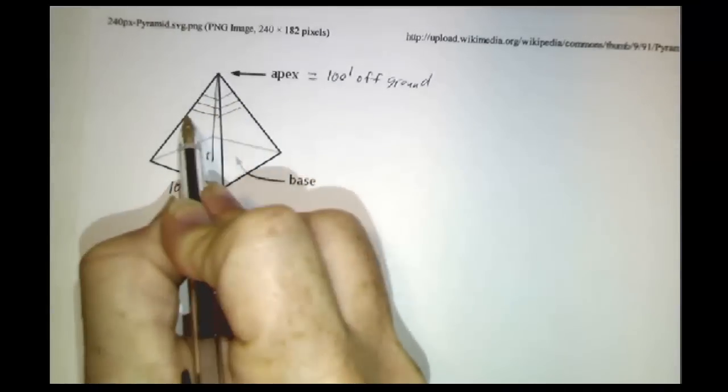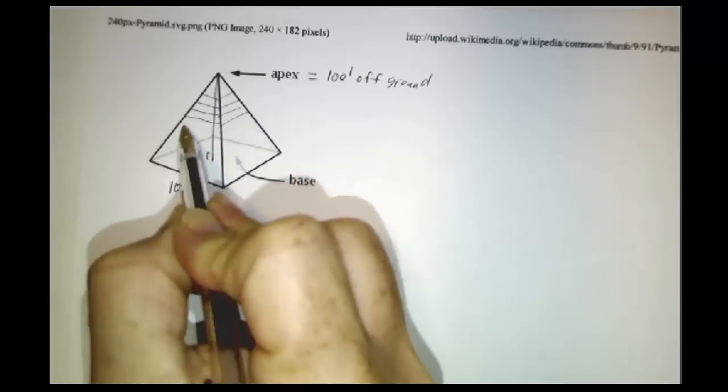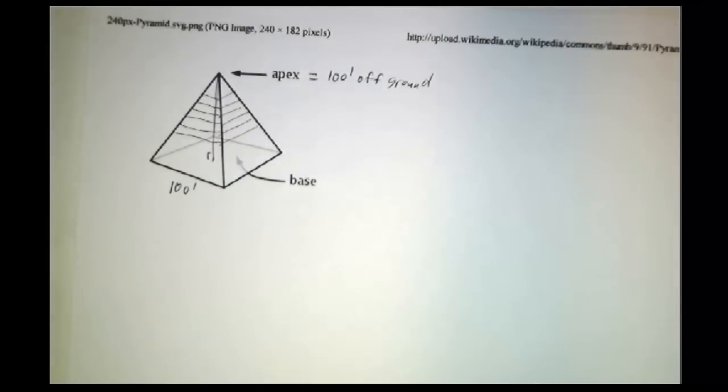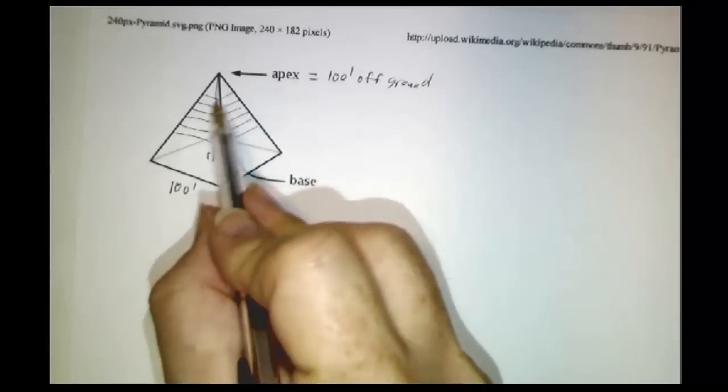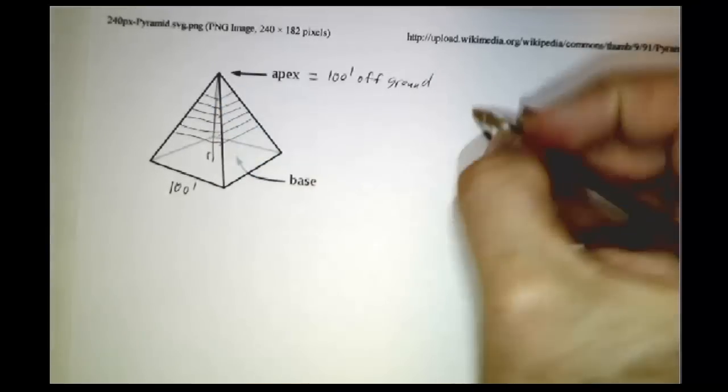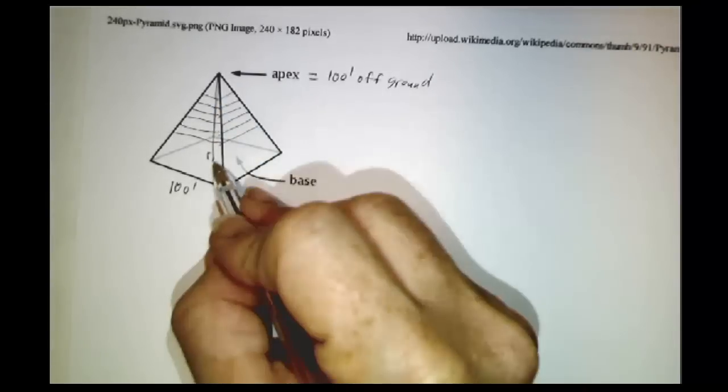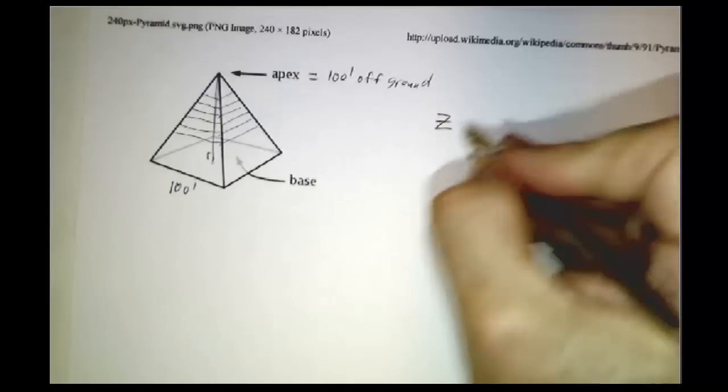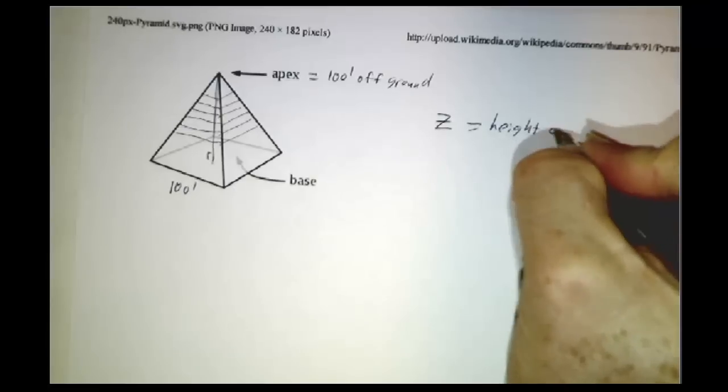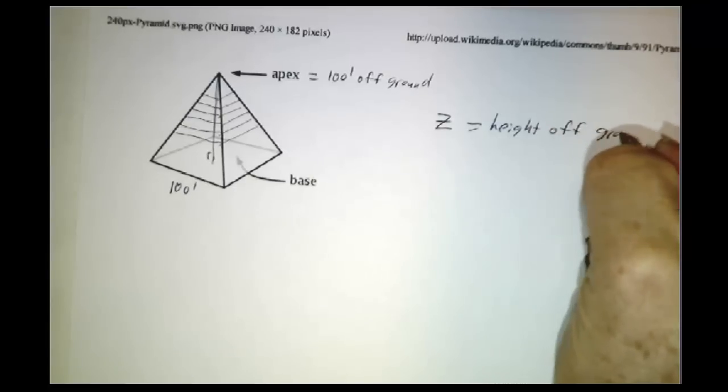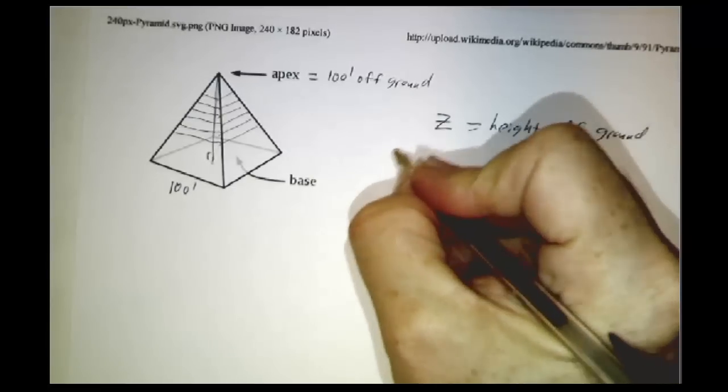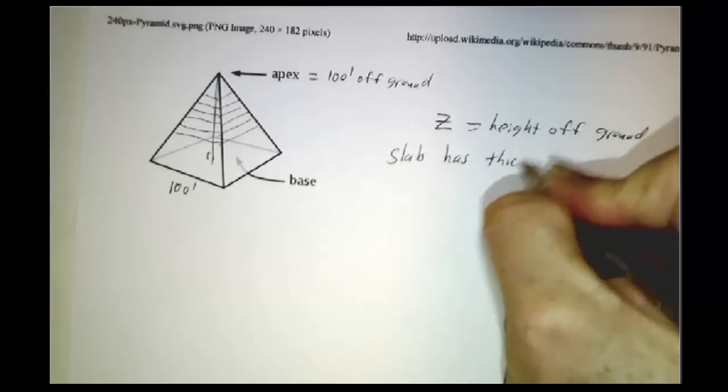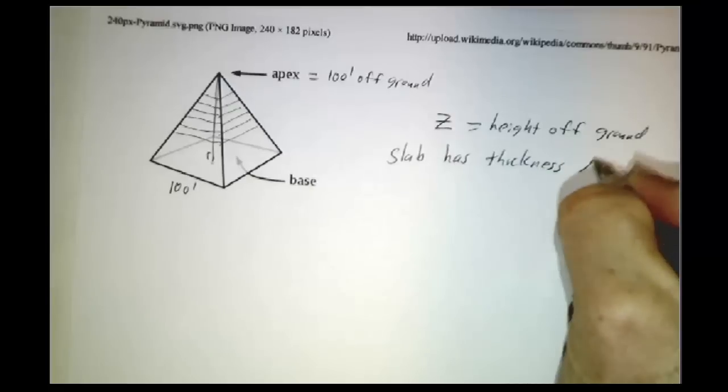So we come up with a bunch of horizontal slices. And as we slice it horizontally, each slab is going to have a thickness. Since we're doing it horizontally, we'll call the height z. That's the height off the ground. And so a slab has thickness, delta z.